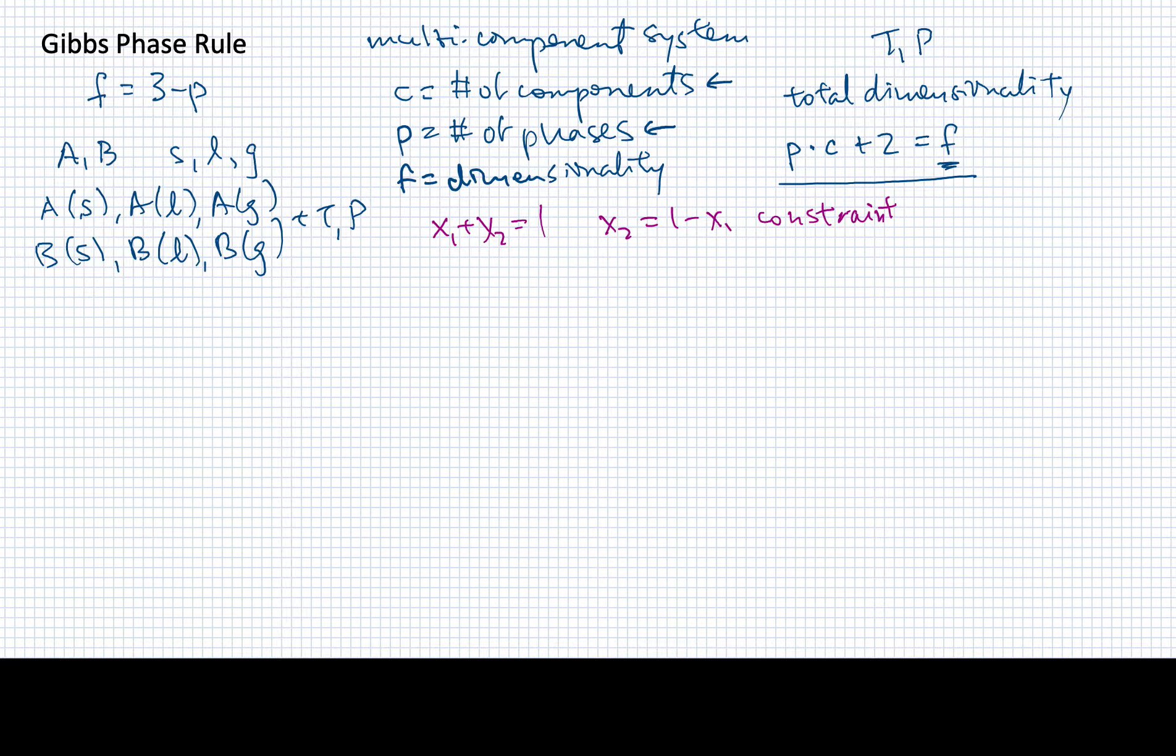So how many constraints would we have for a phase diagram system like this? Well, each phase will have a set of mole fractions, just like I've drawn here. Since I don't know how many components there are, I'll do a summation over the components. And all of those components, the mole fractions, must add up to one. So I'm going to have one of these statements for each of the phases that I may have in the system. Since I have a total of p phases, I'm going to have a total of p constraints.